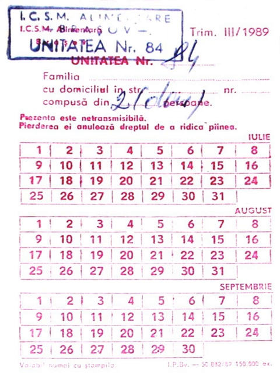Rationing covered more than food products. From April 1952 to January 1953 and from August 1976 to November 1985, ration stamps were introduced for shoes, cigarettes, sugar, sweets, liquor, soap, baby diapers, tires, and cars.